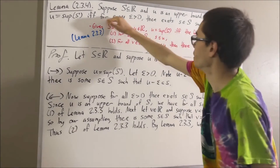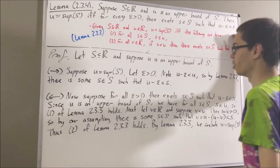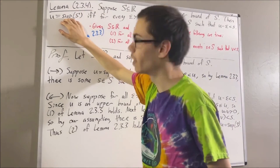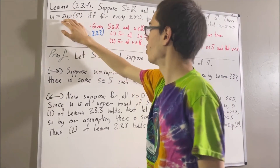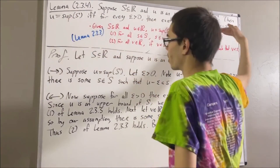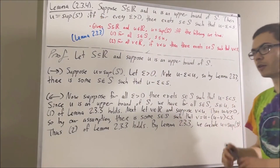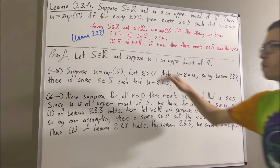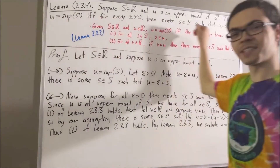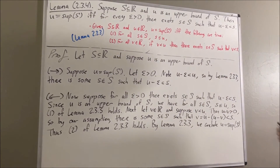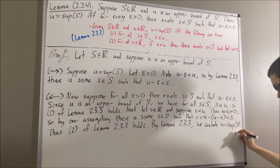We have proven the converse: if the epsilon condition holds, then u is the supremum of S. So we've proven both directions of the if and only if, which means we have proven the entire statement. This completes the proof.